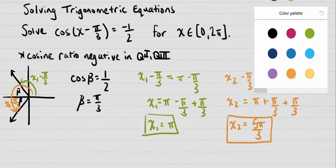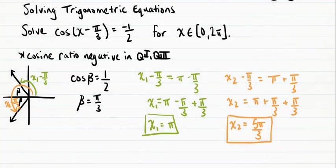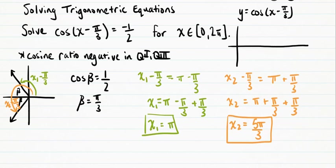If we draw a quick sketch of this function y equals cosine of x minus pi over 3, I'm just going to draw a very quick sketch here. We would get a graph that looks something like this, and you can check this by graphing on your own, where about here is 2 pi and half of that is pi, so that's about here.